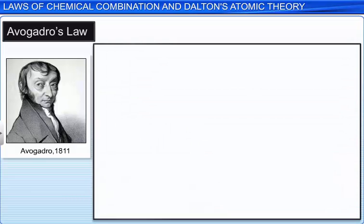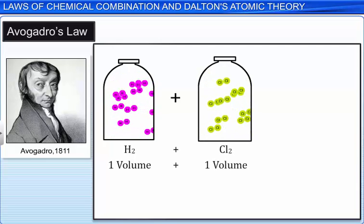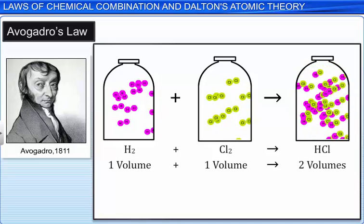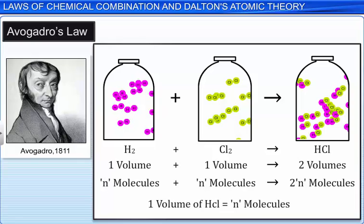For example, one volume of hydrogen combines with one volume of chlorine to form two volumes of hydrogen chloride gas. For this to be true, it would mean that the number of molecules in one volume of hydrogen N will be equal to the number of molecules in one volume of chlorine N. During the reaction, they will form two volumes of hydrogen chloride gas which will contain N plus N, that is 2N number of molecules, which means that the number of molecules in one volume of hydrogen chloride is equal to N.